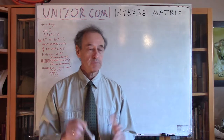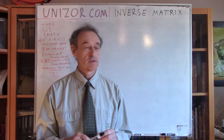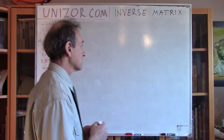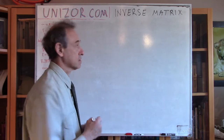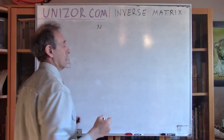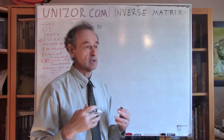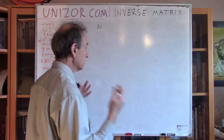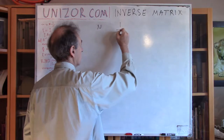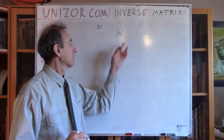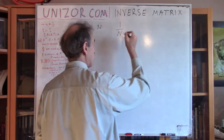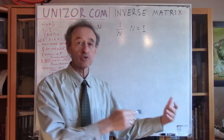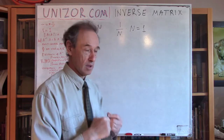Let me start from division of numbers. The very convenient way to introduce division of numbers is first to introduce an inverse number. So if you have an integer number n, we define a new number which we symbolically write as 1 over n. This new number, by definition, multiplied by n gives 1. This is basically the way we introduce rational numbers given integer numbers.